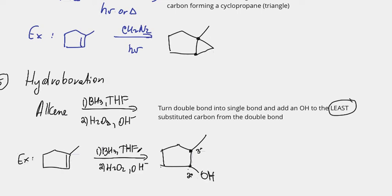This is a rare reaction because almost everything else adds to the most substituted carbon. So if you're doing synthesis and you see an alcohol added to the least substituted carbon, there's a very high chance hydroboration-oxidation was used. This has been Transformation Tutoring — I hope you enjoyed the video and I hope to see you in more of my general chemistry and organic chemistry videos.